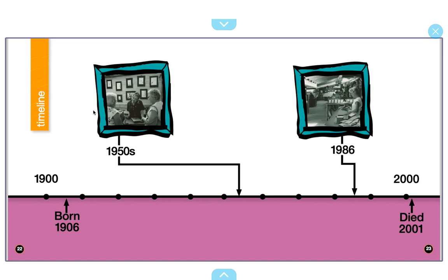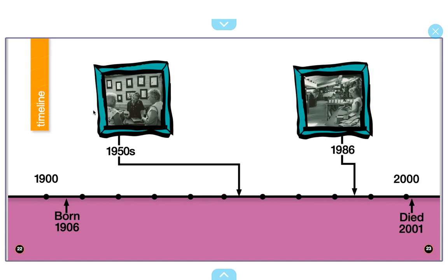This is an important nonfiction text feature — this is an example of a timeline. This timeline dates from 1900 all the way to 2000. Remember that Gwen was born in 1906 and overcame her sickness. Her mother encouraged her to draw nature and bring it to life through her paintings and artwork. She went to art school, used her skills to help fix and build airplanes during the war, opened her own shop in northern Michigan, was inducted into the Hall of Fame, helped with the environmental movement, and died in 2001. Throughout her lifetime, Gwen had many accomplishments.